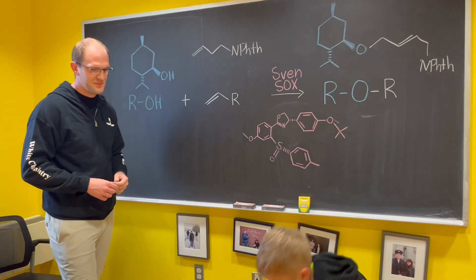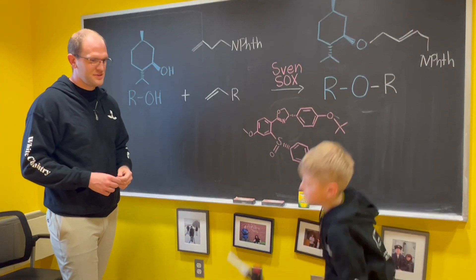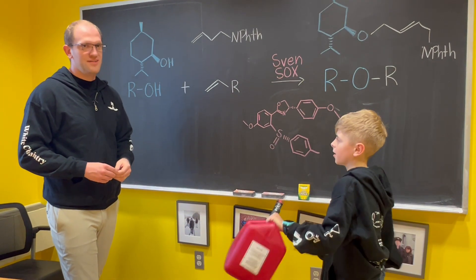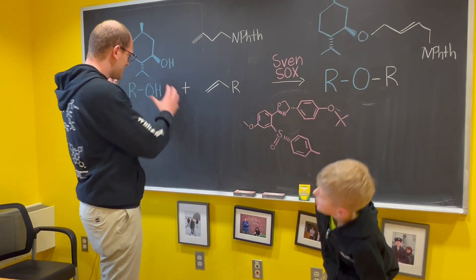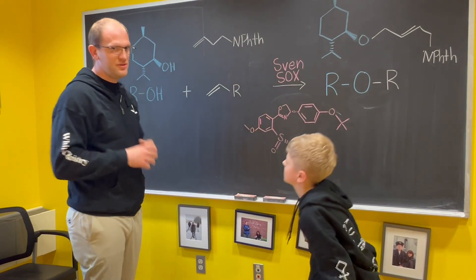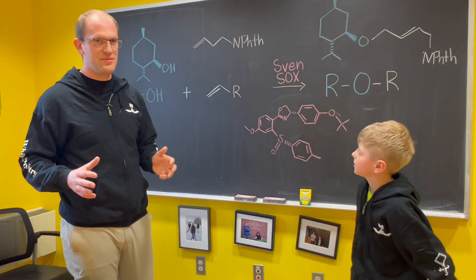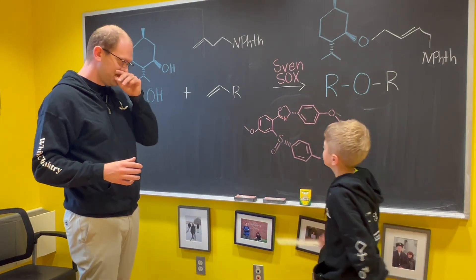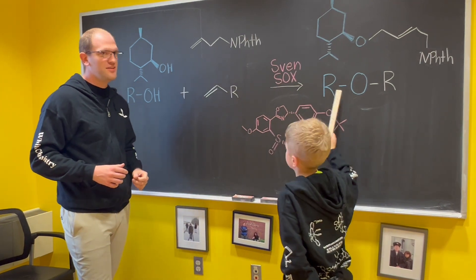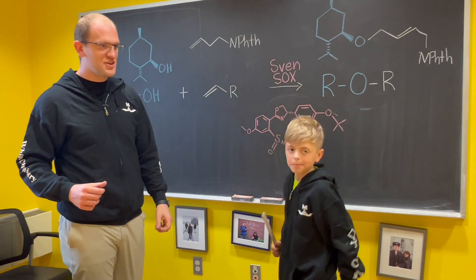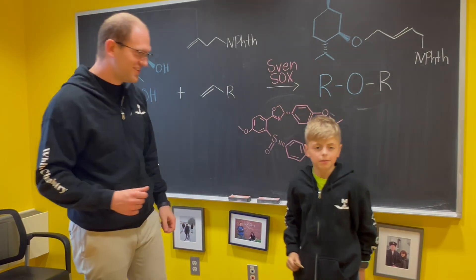Alkenes are commonly found in things like gasoline — like what my parents use to fill up their car. Usually if you mix an alcohol and an alkene together, no reaction happens. But if you add SvenSOX, you can get ethers. Let's go make an ether.